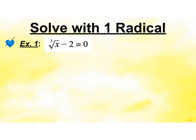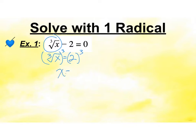Here is solving with one radical. The first thing we want to do is isolate the radical and get it all by itself. So I'm going to add 2 to both sides, so I get the cube root of x equals 2. Now if I want to undo something that is cube rooted, I'm going to cube both sides and I get x to be 8. The cube root of 8 is 2, and 2 minus 2 is 0, so that works.